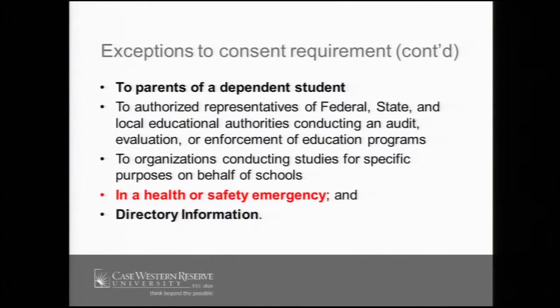More exceptions: parents of a dependent student. Remember, once an eligible student possesses FERPA rights, there are certain limited circumstances where parents still may be able to access information from the records. One such circumstance is when the student is a tax dependent of the parents — then the university may disclose education records to parents without the student's consent, after first verifying the student's tax dependent status, and it's still at the university's discretion. If a student is under 21 years of age, a university may also inform their parents of the student's violation of its alcohol and drug policies, regardless of whether the child is a tax dependent and regardless of whether or not it's an emergency situation.